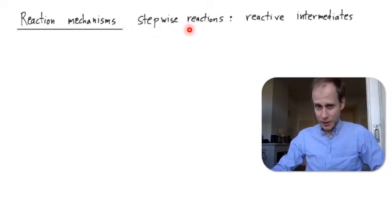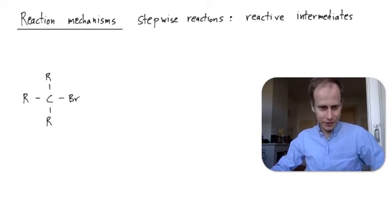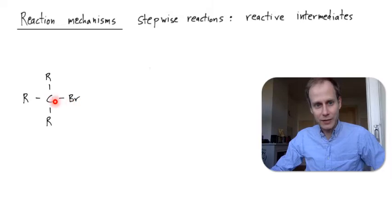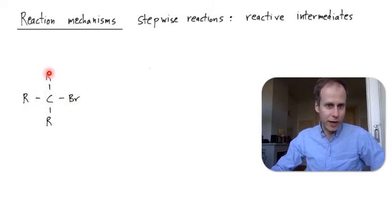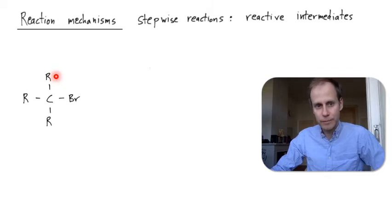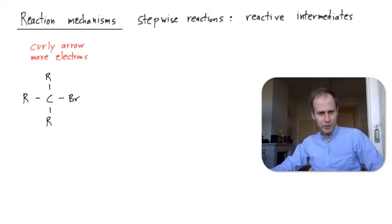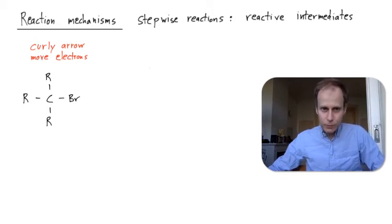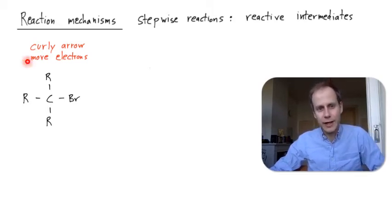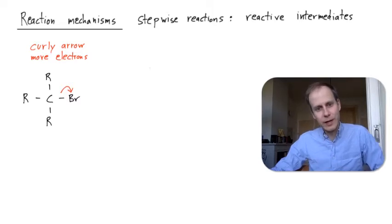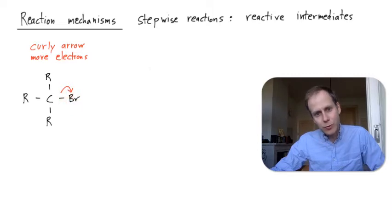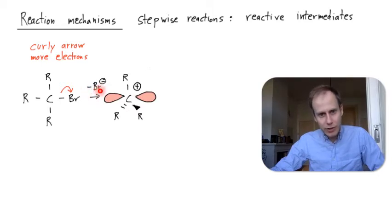Many reactions proceed stepwise and they produce reactive intermediates. Here's an example: a bromine attached to a carbon that has other R groups, which could be any functional group — a methyl, an ethyl, an alcohol group. To describe this stepwise reaction we use a so-called curly arrow notation, and the curly arrows indicate the movement of electrons. Here, such a curly arrow indicates that the two electrons from this sigma bond move to the bromine.